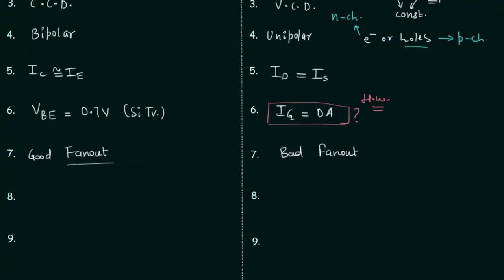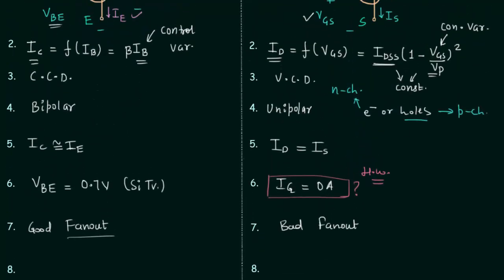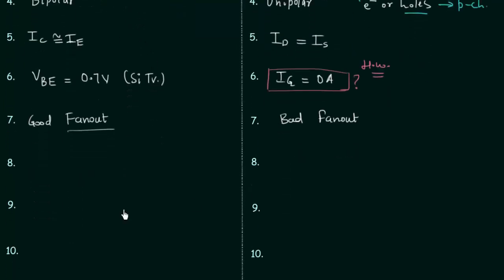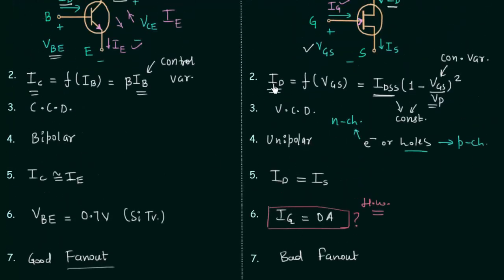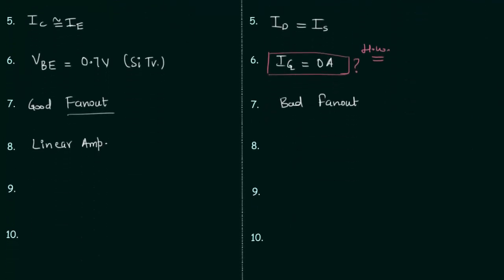The eighth point: the relation between IC and IB is linear, so we call BJT a linear amplifier. In case of JFET, the relation between ID and VGS is nonlinear because of the square term in the equation, so we call JFET a nonlinear amplifier.